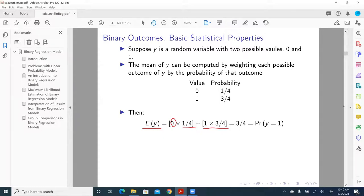And by looking at this derivation, we will know that for a binary variable, for a binary random variable, its mean is equal to what? The probability of y equal to 1. If y, that binary variable, is coded 1 and 0.